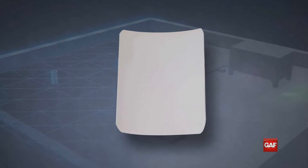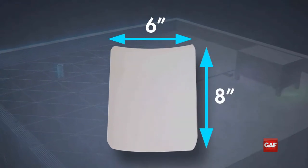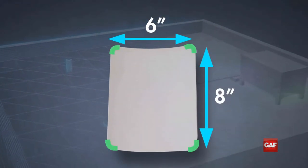cut a piece of Evergard detailing membrane approximately 6 inches by 8 inches and round all the corners for maximum adhesion.